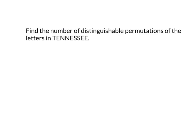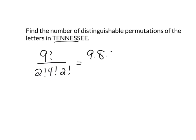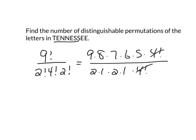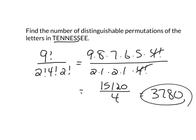What better word to demonstrate with than 'Tennessee'? Tennessee has nine letters, so we put 9 factorial in the numerator. Looking at the repeats: two N's, four E's, and two S's. So the denominator is 2 factorial times 4 factorial times 2 factorial. Working it out: 9 times 8 times 7 times 6 times 5 in the numerator - the 4 factorial cancels - giving 15,120. The denominator is 2 times 1 times 2 times 1 equals 4. Dividing: 15,120 divided by 4 equals 3,780 different ways to rearrange the letters in Tennessee.